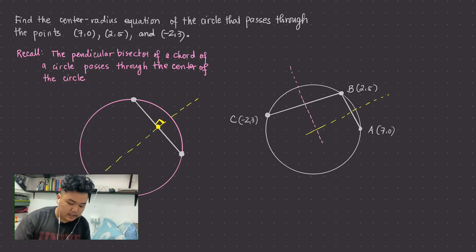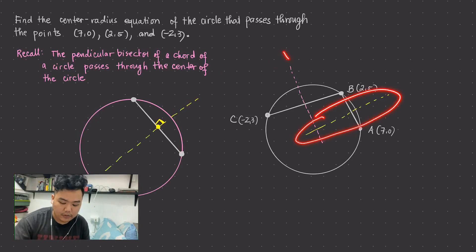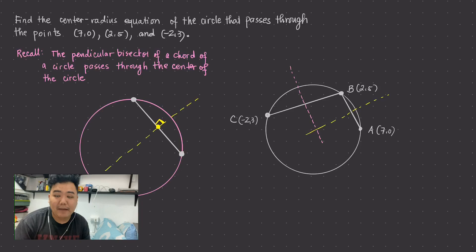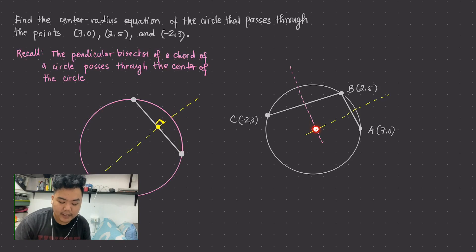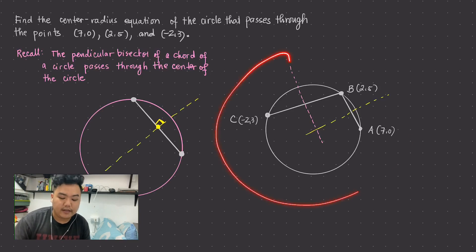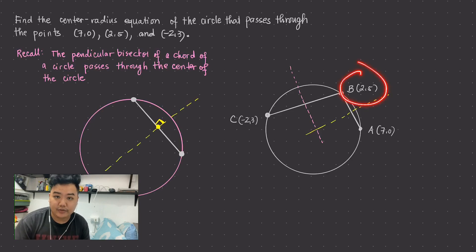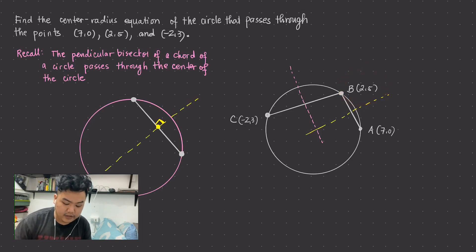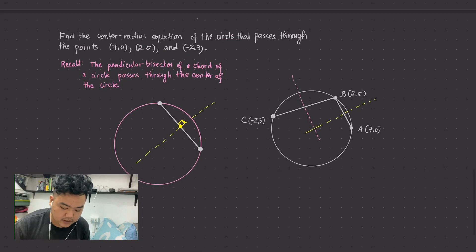According to the theorem, these two perpendicular bisectors — the one in yellow and the one in pink — must pass through the center of the circle. So the point of intersection of these two perpendicular bisectors is the center of the circle. And once we know the center, we can use the standard form to get the radius and the standard equation of the circle.